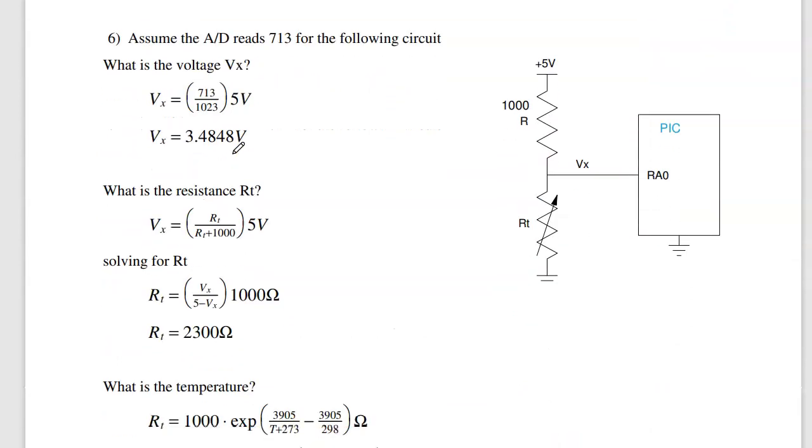Problem number 6. If I have an analog input, I'll read a number. Suppose that number is 713. What's that mean? Well, that means the voltage. 5 volts is 1023. 0 volts is 0. 713 is that percentage of full reading. That percentage of 5 volts. Vx is 3.48 volts.